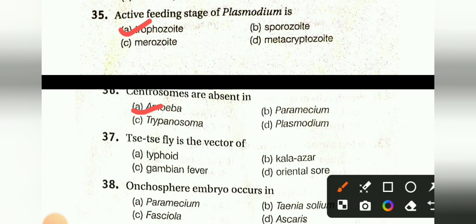Tsetse fly is the vector of: Typhoid, Kala-azar, Gambian Fever, or Oriental Sore. The answer is Gambian Fever.